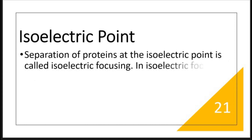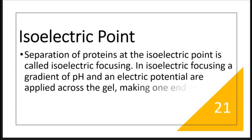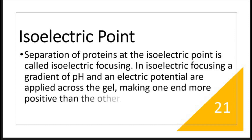To separate proteins at their isoelectric point, a process called isoelectric focusing is used. In this process, a gradient of pH and an electric potential are applied across the gel, making one end more positive than the other.